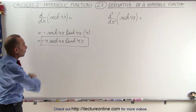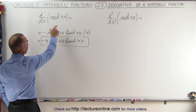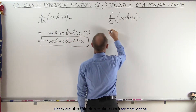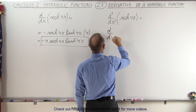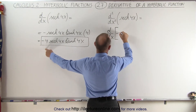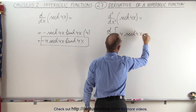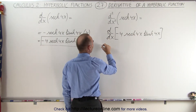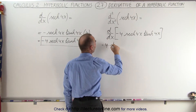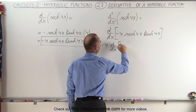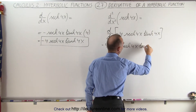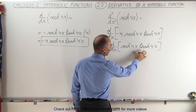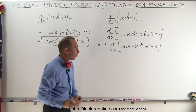Now we're going to take the second derivative, which means taking the first derivative of what we just found. This is equal to the first derivative of minus 4 times the hyperbolic secant of 4x times the hyperbolic tangent of 4x. We can factor the negative 4 outside, then take the derivative of the remaining product using the product rule.